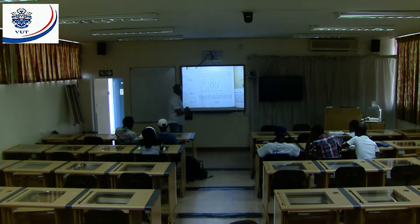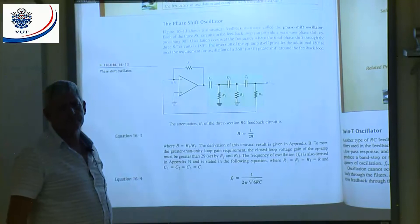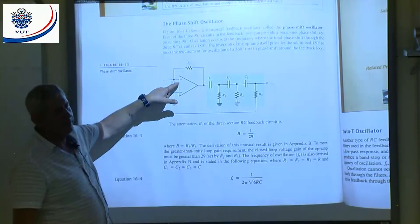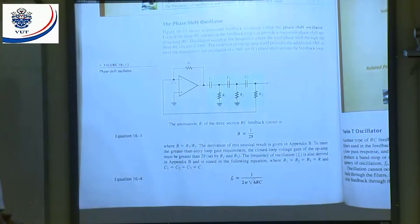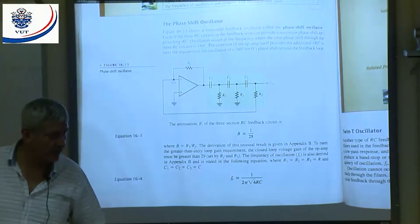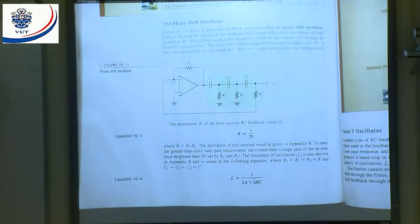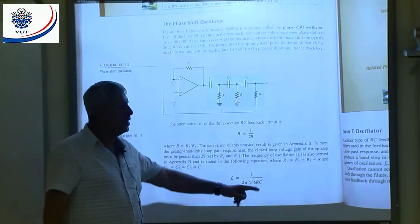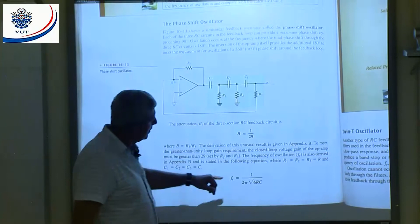Next: the phase shift oscillator. This uses an inverting amplifier — the input is at the inverting input, so there's 180 degrees phase shift between input and output. The attenuation for this circuit is 1/29, compared to 1/3 for the Wien bridge. That means the gain of my amplifier should be 29, so that 29 times 1/29 equals one. The resonant frequency formula is FR = 1 / (√6 × 2πRC). The square root sign does not extend across the R and C values — a common student mistake.